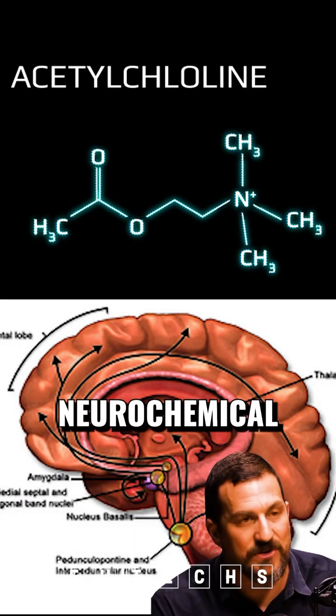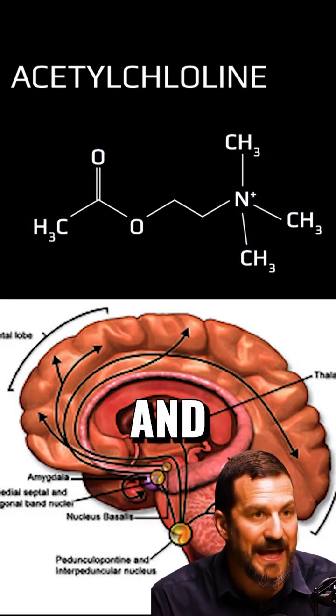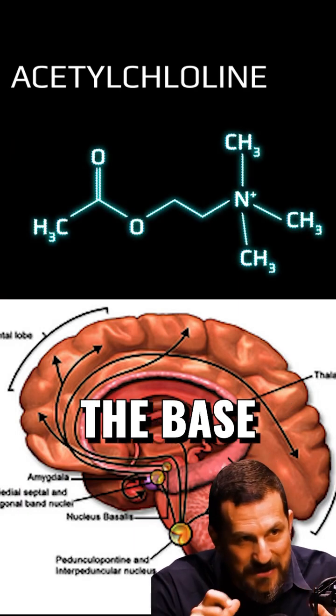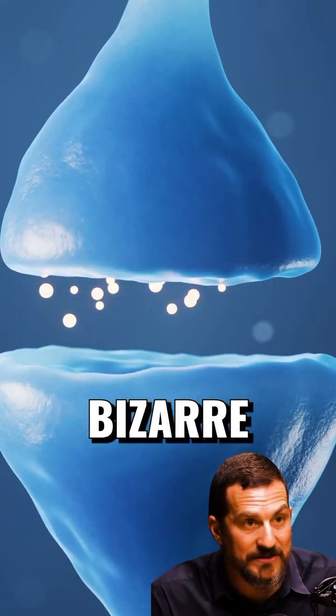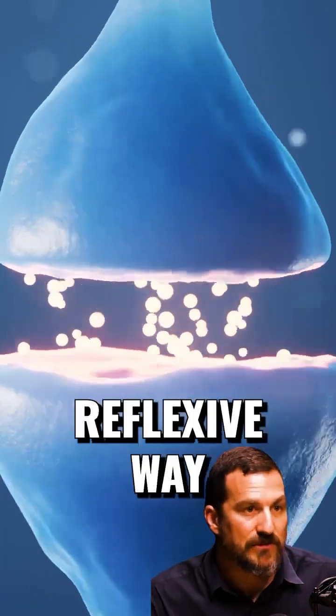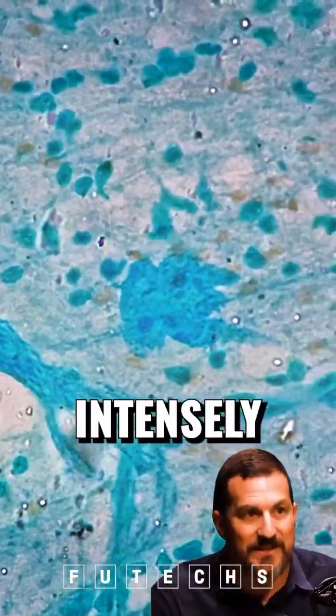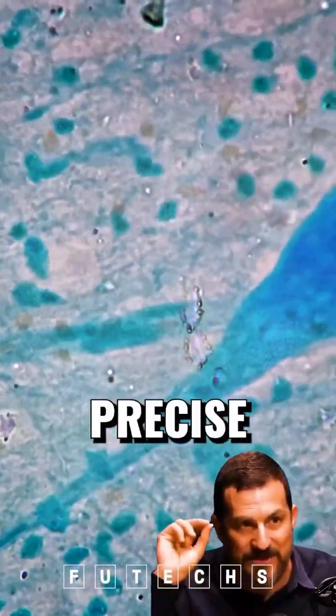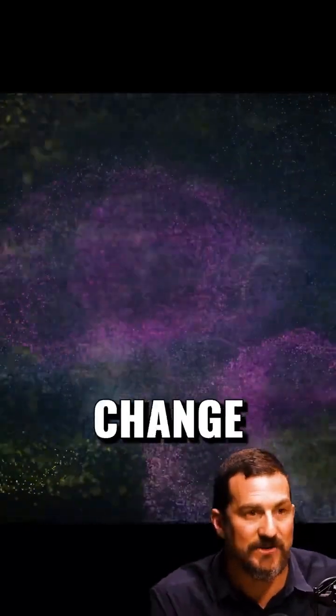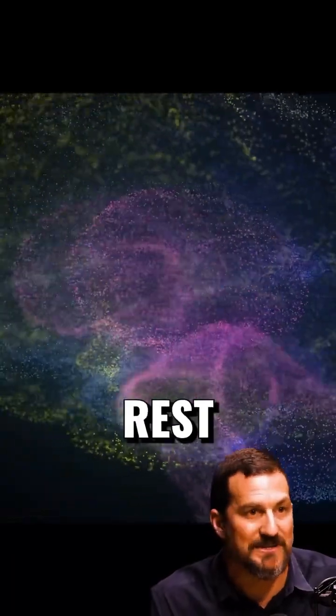The reason for that is there's a neurochemical system involving acetylcholine. It comes from two little nuclei down in the base of the brain called nucleus basalis. All day long, you're doing things reflexively. But when you do something and think about it very intensely, acetylcholine is released from basalis at the precise neurons involved in that behavior, marking them for change during sleep or deep rest later.